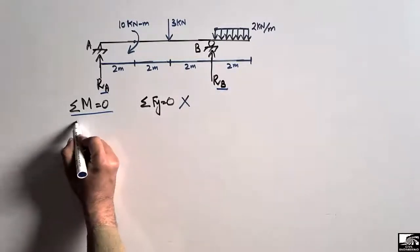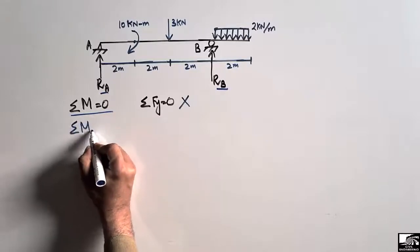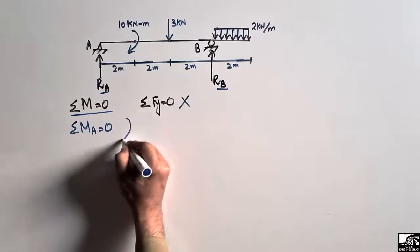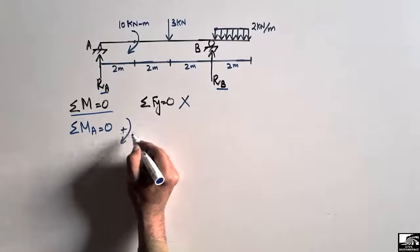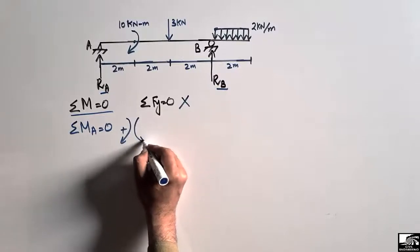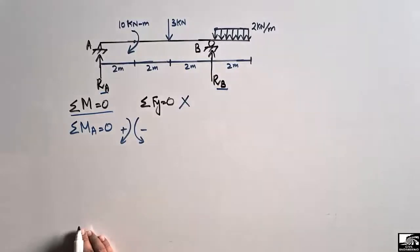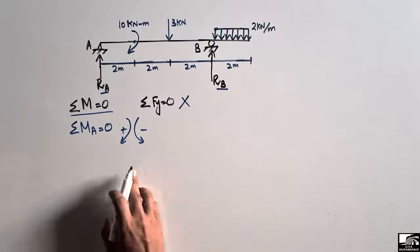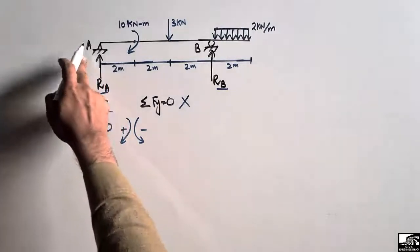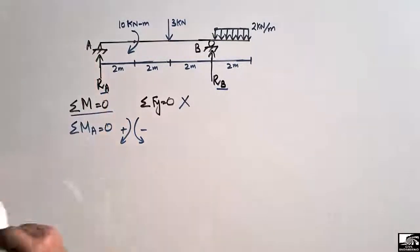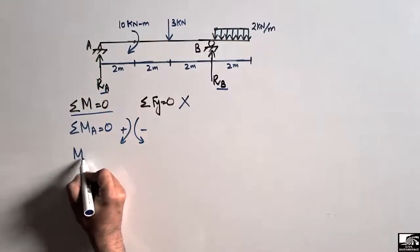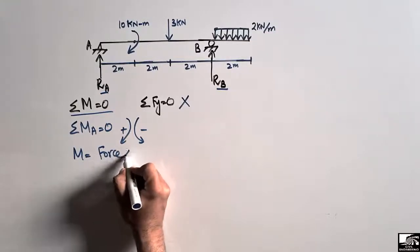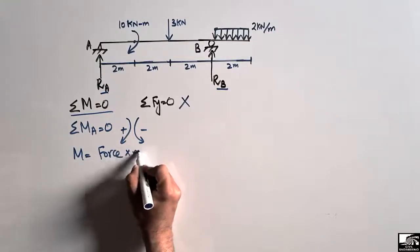We take summation of moments at point A equal to zero. Our sign convention is: clockwise moment is taken as positive, and anti-clockwise moment is taken as negative. The moment is calculated using the formula: moment equals force multiplied by the moment arm.